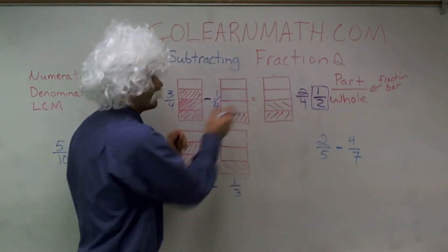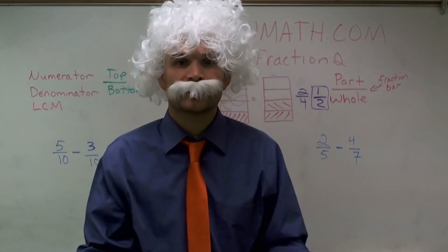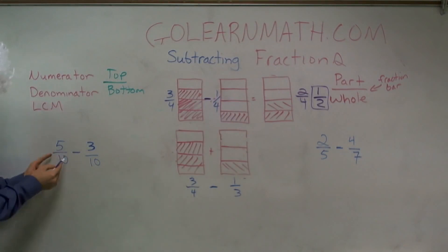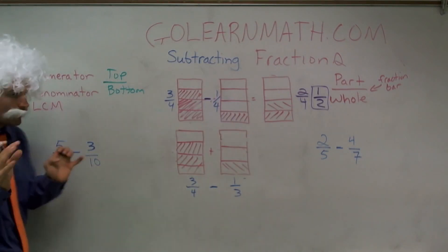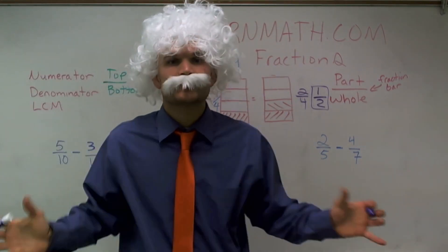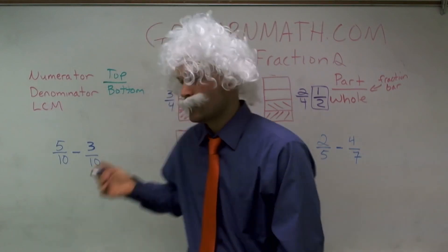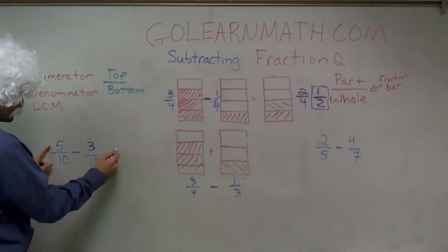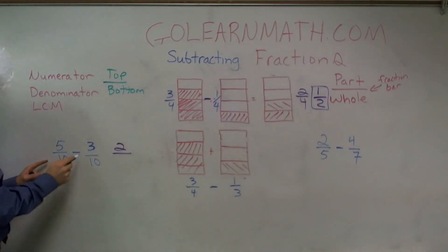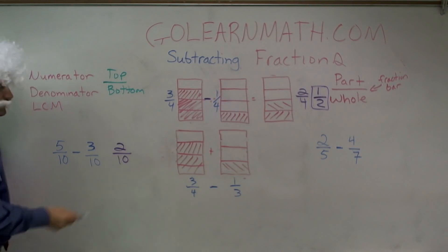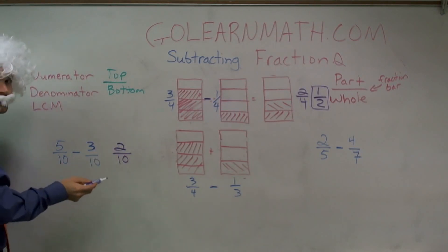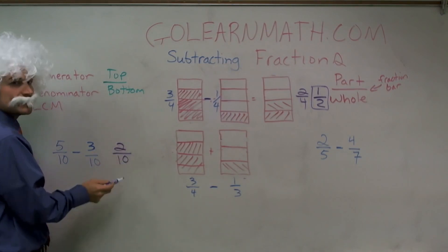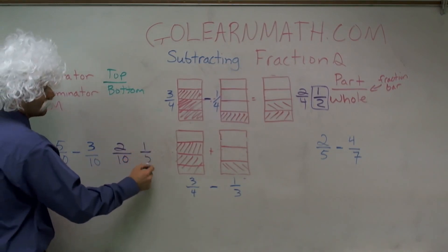So that's the general idea. Let's work on some extra problems. The first one: five-tenths minus three-tenths. When subtracting fractions, we make sure the denominators are the same, then simply subtract the numerators. Five minus three is two over ten. Now I can reduce this — two is a common factor for both, so dividing top and bottom by two gives me one-fifth.